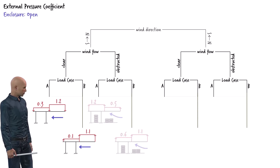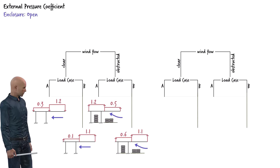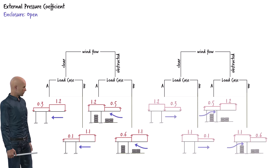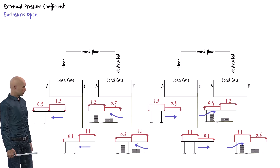Here are the pressure coefficients for load cases A and B when wind flow is obstructed under the roof. These four loading scenarios correspond to wind blowing from south to north. We have a similar set of loading scenarios when the wind direction is reversed, that is, when it blows from north to south.